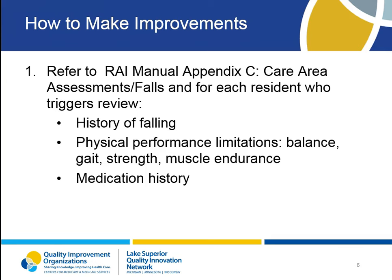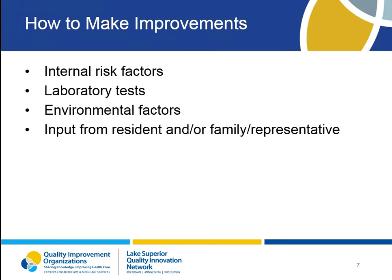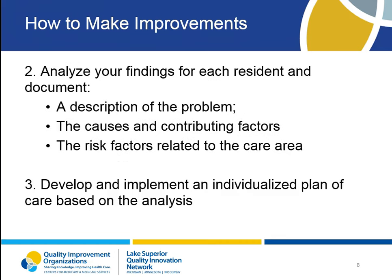For each resident who triggers for this quality measure, review their history of falls, physical performance limitations, medication history, as well as internal risk factors, laboratory test results, environmental factors, and input from the resident and/or family or representative. Then analyze your findings, and for each resident, document a description of the fall, the causes and contributing factors for the fall, as well as the factors that put the resident at risk for falls. This information should then be used in the development and implementation of an individualized plan of care for each resident, which should decrease risks for falls with a major injury, and thus help improve this quality measure.